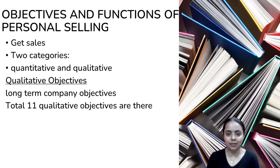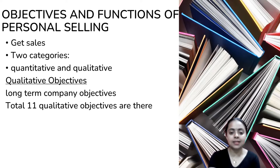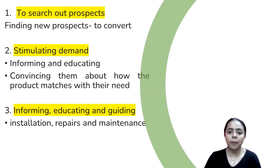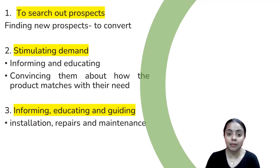The objectives are quantitative and qualitative. Qualitative objectives include long-term company objectives, company strategies, and long-lasting relationships. The first qualitative objective is prospecting — identifying a list of potential customers. The customer should have a potential and a good profile. Identifying the prospect is the first point of qualitative objectives.